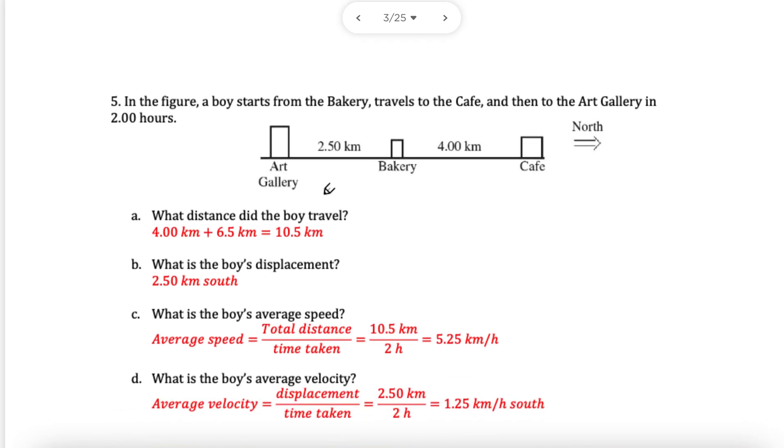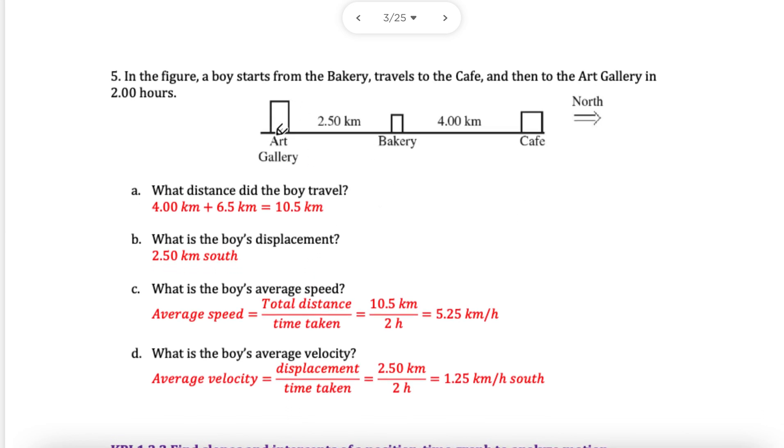Now we have this problem where we have to find the distance the boy travels, the displacement, the speed and velocity. Four things. We're starting here, it's saying north is this way. If that's north, this must be the opposite, which is south. He starts from the bakery, travels to the cafe and then to the art gallery. He goes that way four kilometers, then back that way four again, and all the way to the art gallery, four plus 2.5.